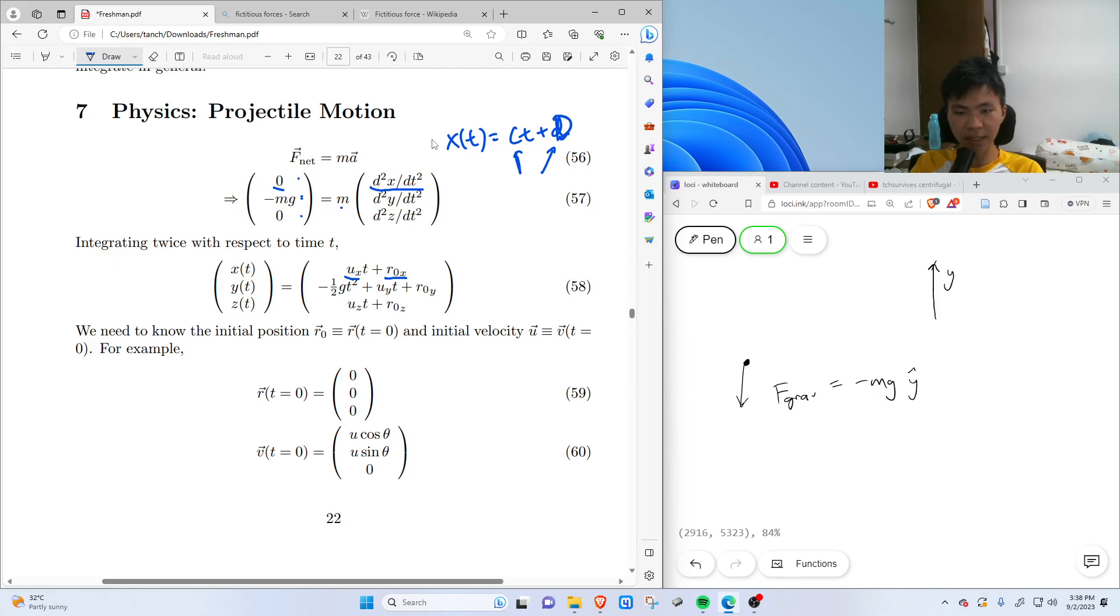And likewise for Z. Same thing, second derivative of 0. So we integrate twice. Integrate 0 twice gives us two constants of integration, which corresponds to the initial velocity in the Z direction, as well as the initial Z location of the particle.